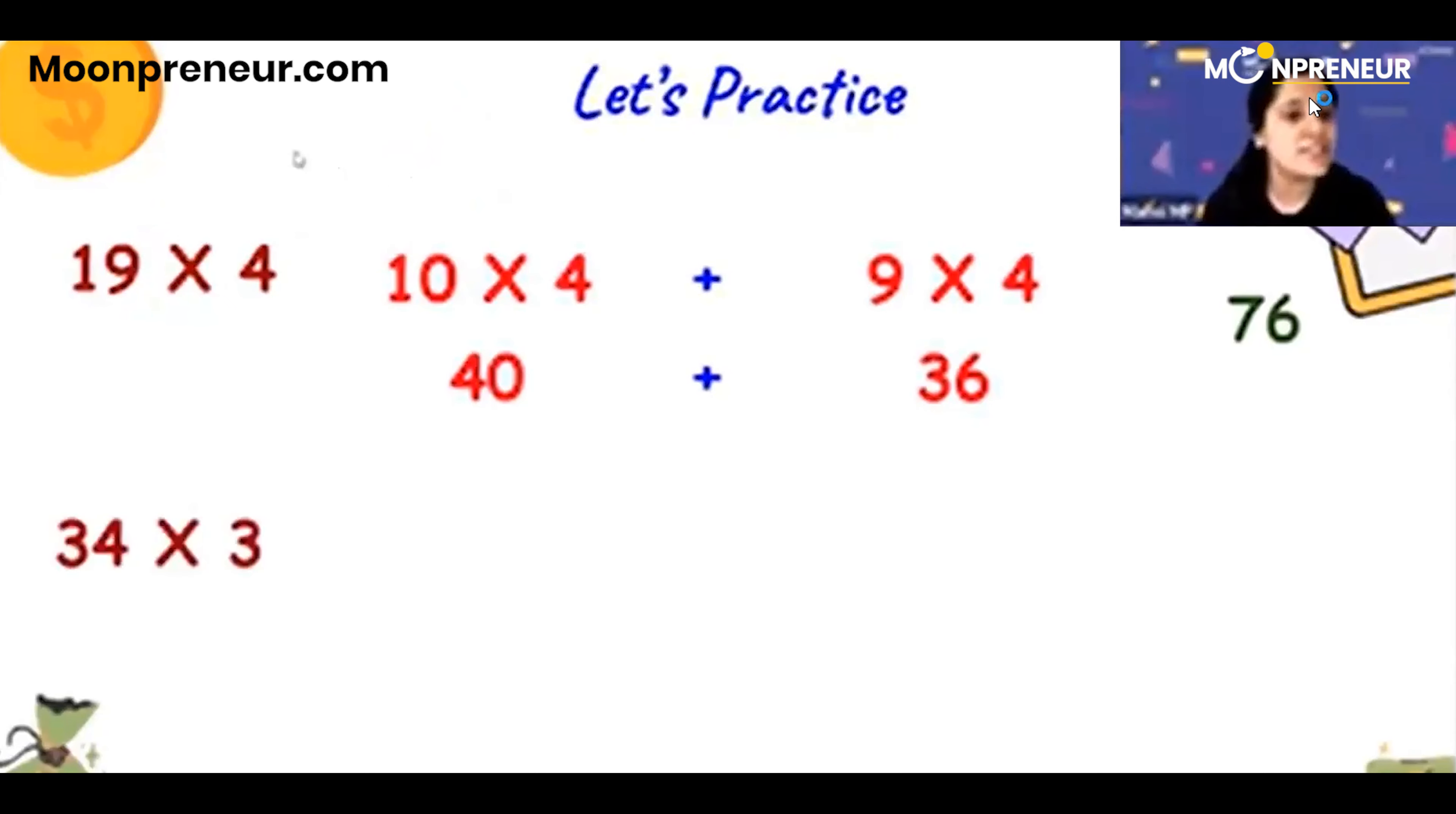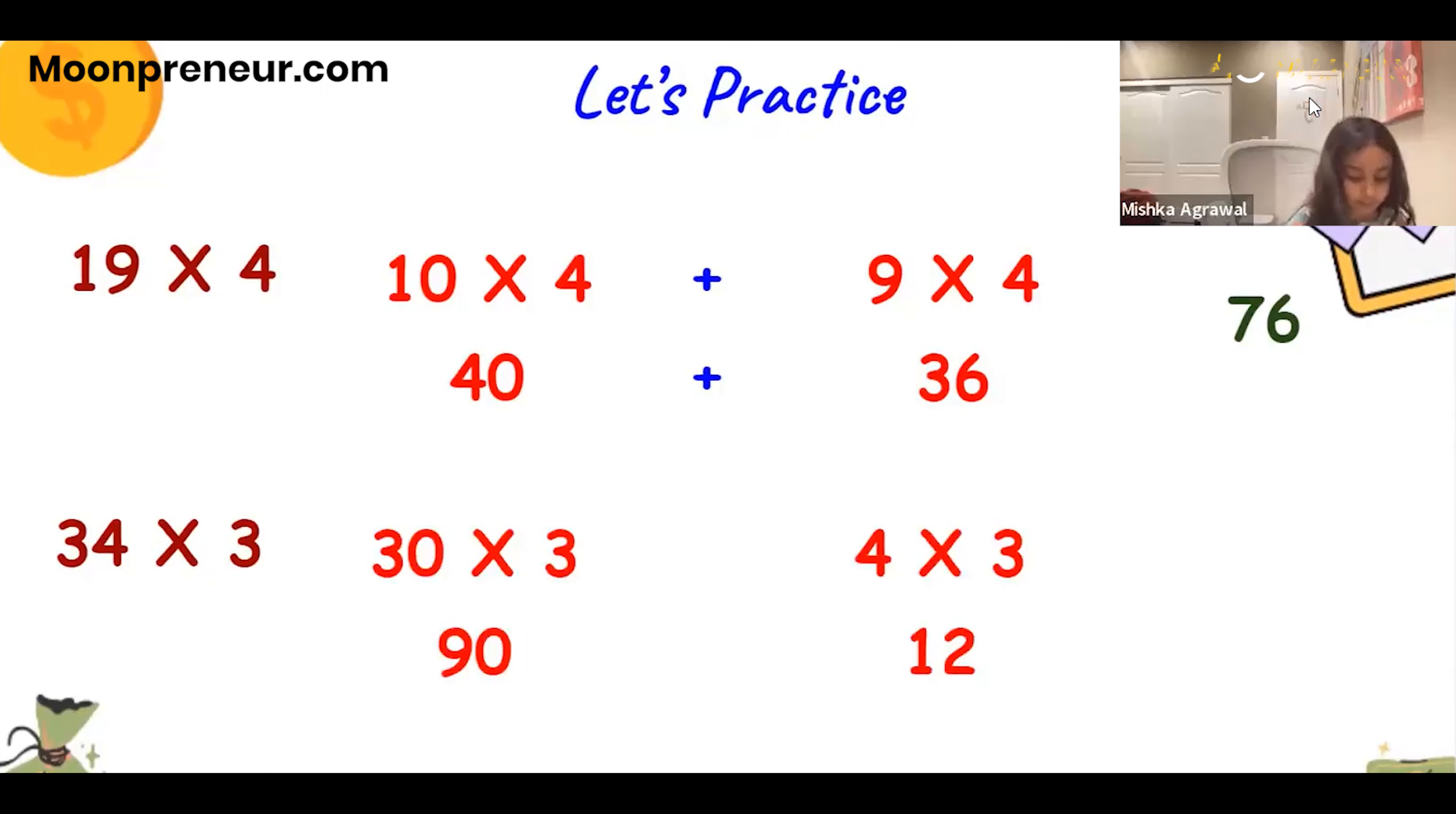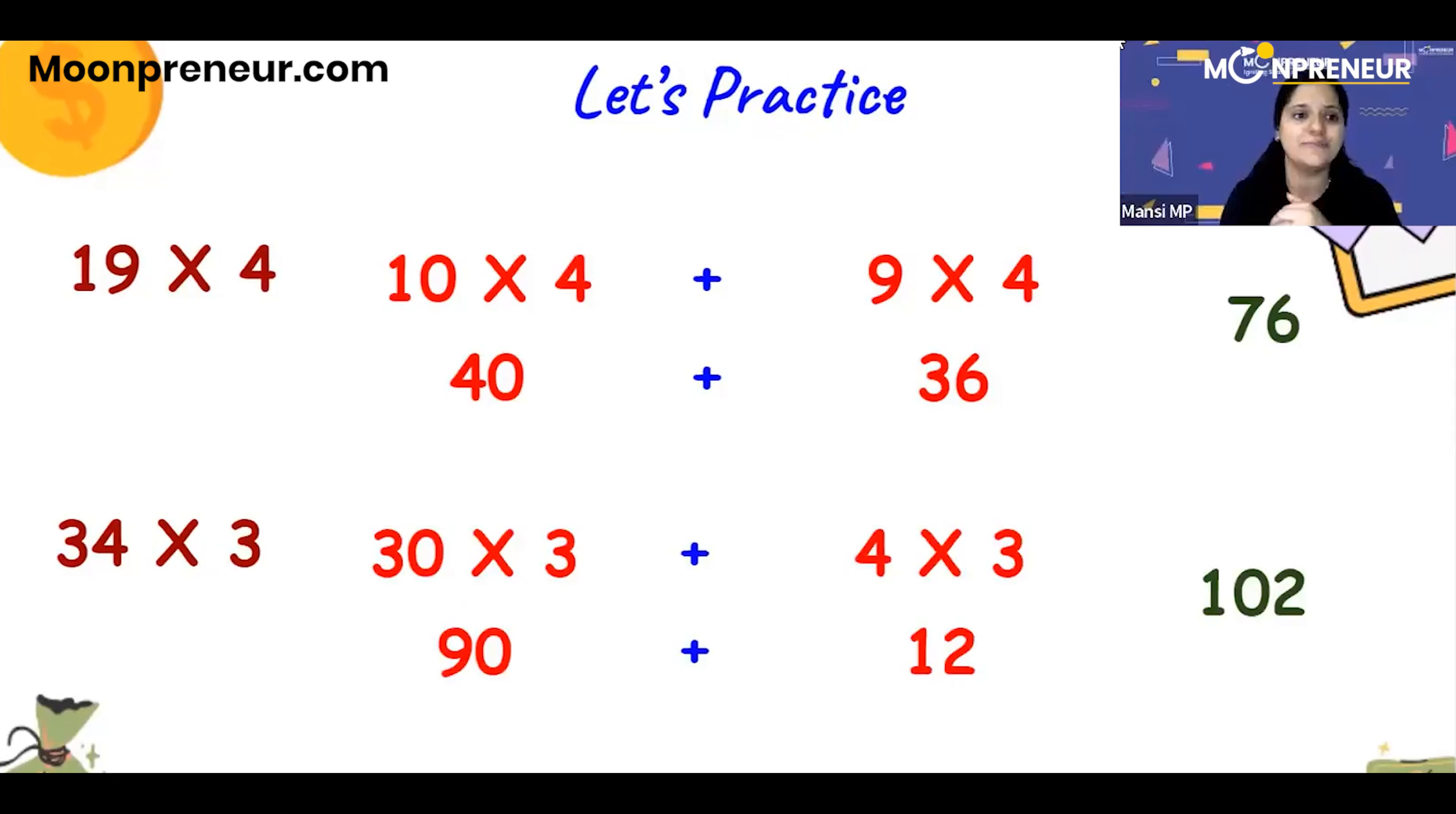Now can you tell me the answer for this? 34 times 3? Can I use a piece of paper to do the trick? Yes, you can. Times 3? Yes, yes. Equals 90 and 4 times 3 equals 12. Yes. 90 plus 12 equals 102. So 34 times 3 equals 102. Very well done. Good job. Thank you.